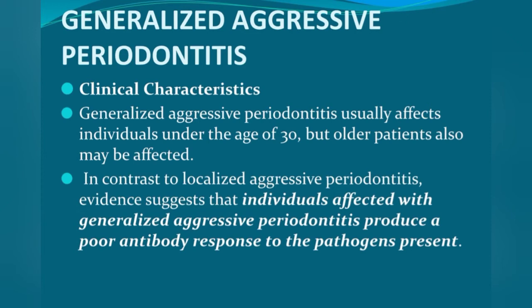Generalized aggressive periodontitis usually affects individuals under the age of 30, but older patients may also be affected — in contrast to localized aggressive periodontitis. Evidence suggests that individuals with GAP produce a poor antibody response to the pathogens present, whereas in localized aggressive periodontitis there is a strong antibody response. LAP is seen mainly at puberty, but GAP may occur in patients a little older, though still under 30, and older patients may also be affected.